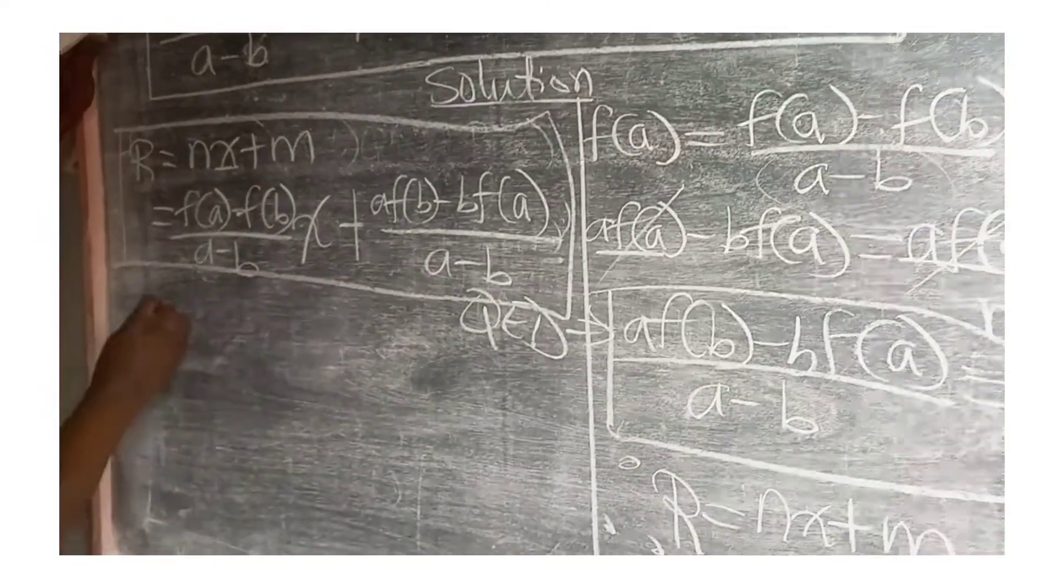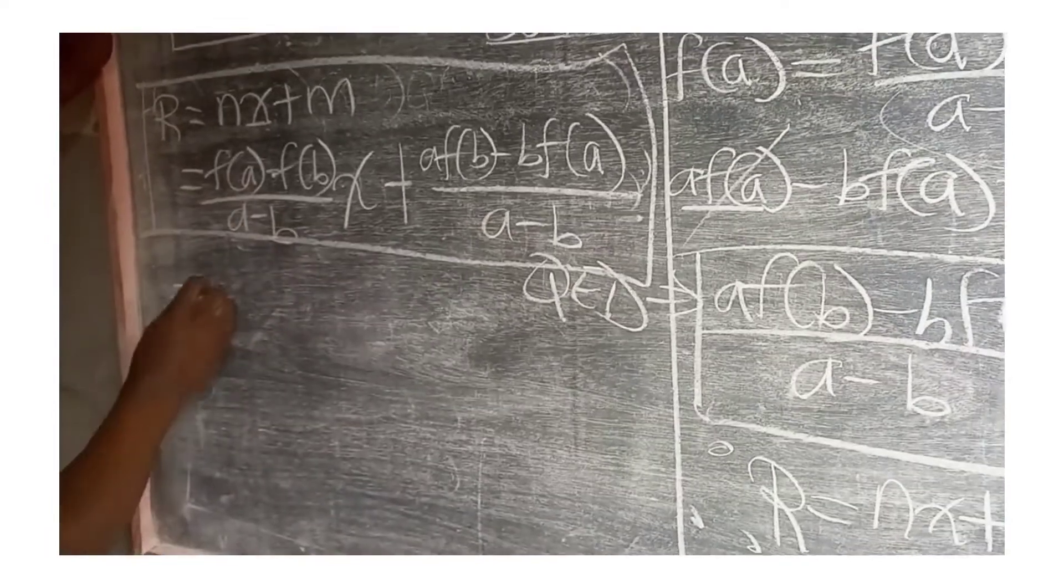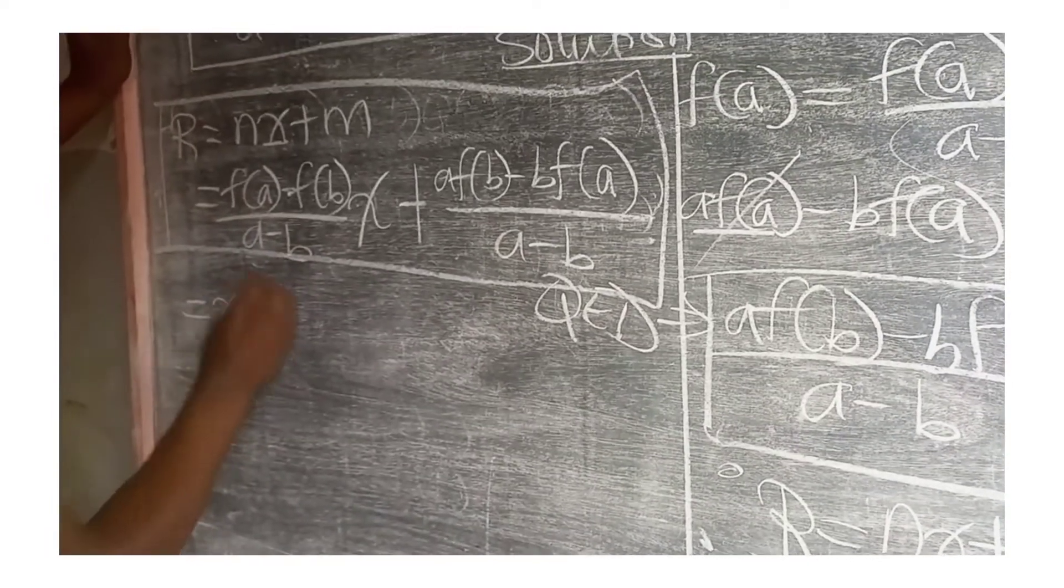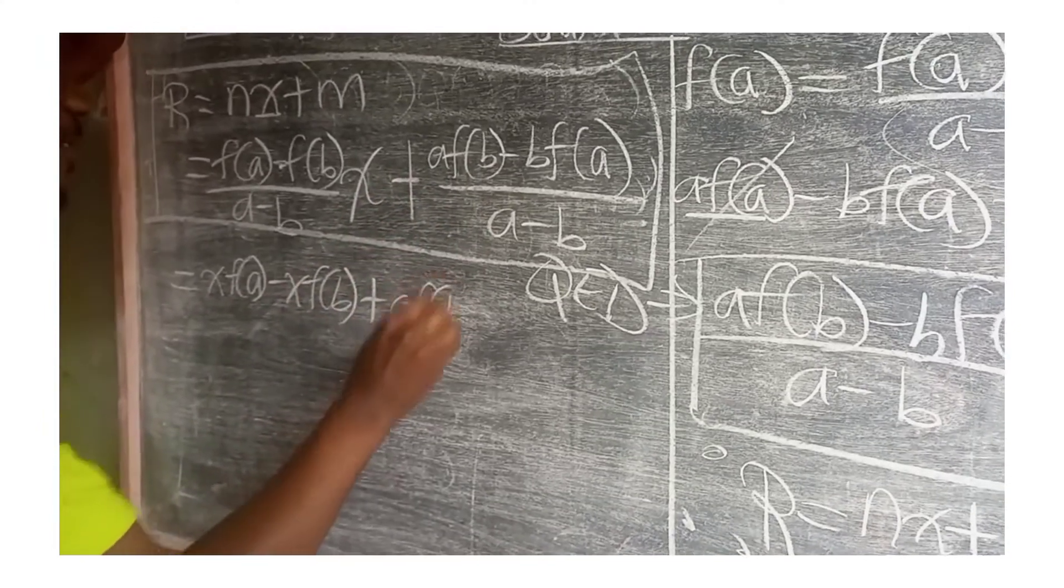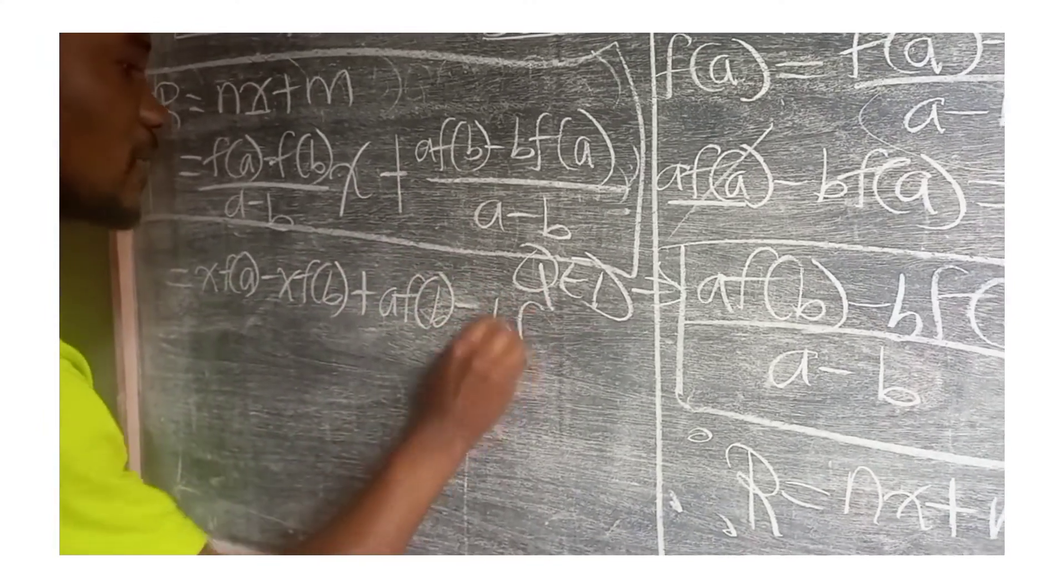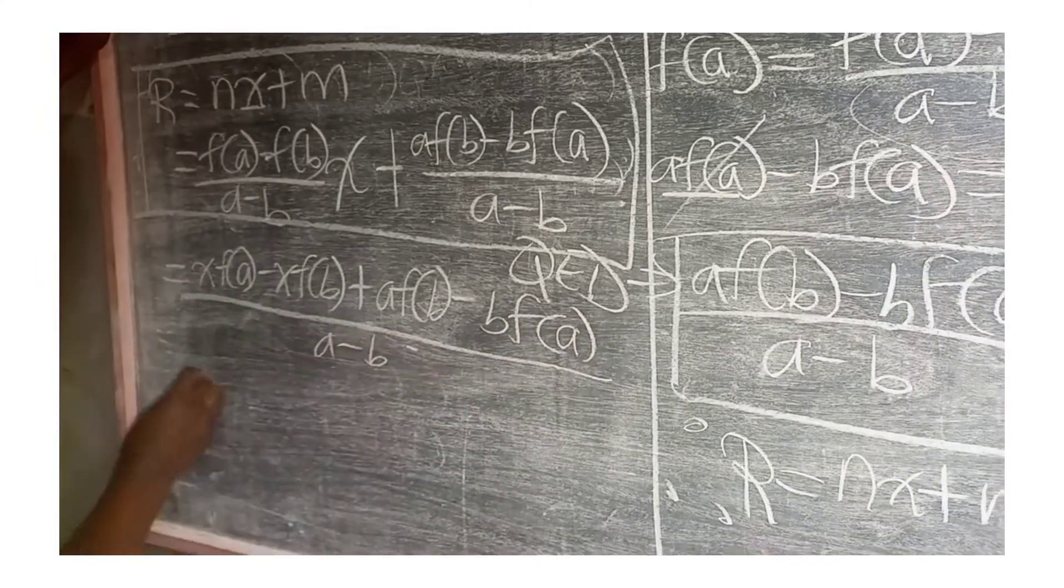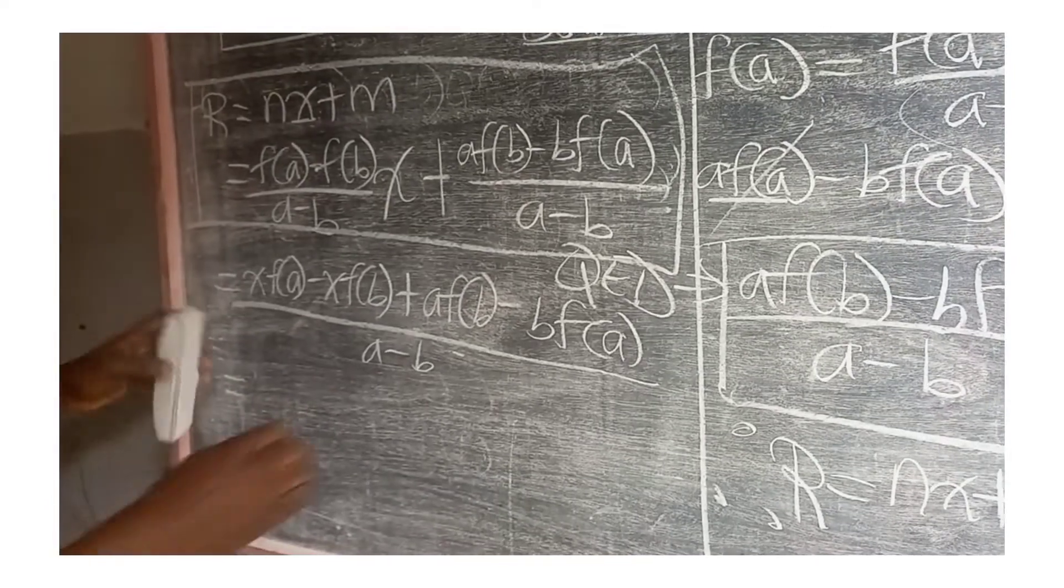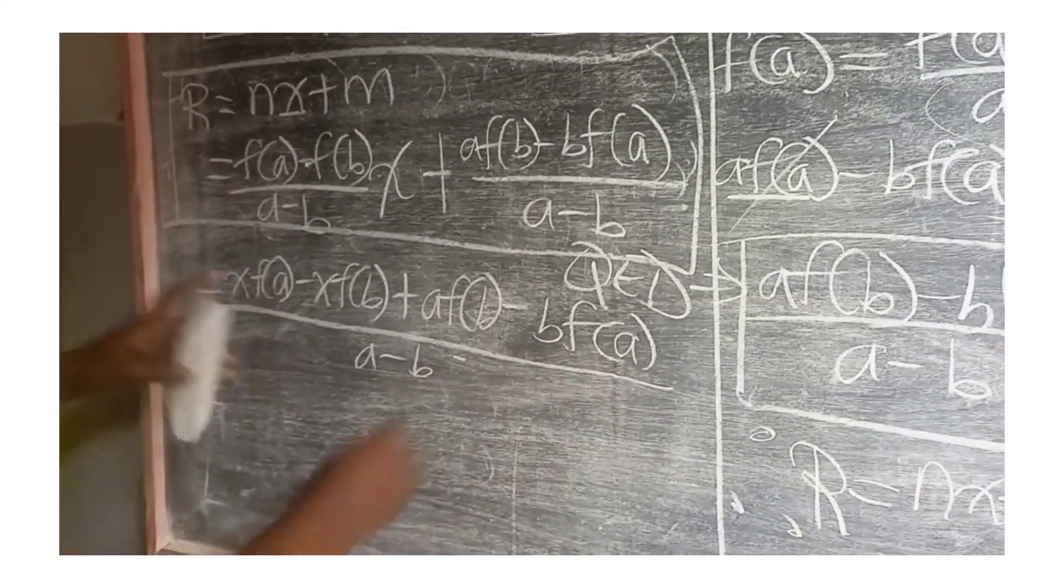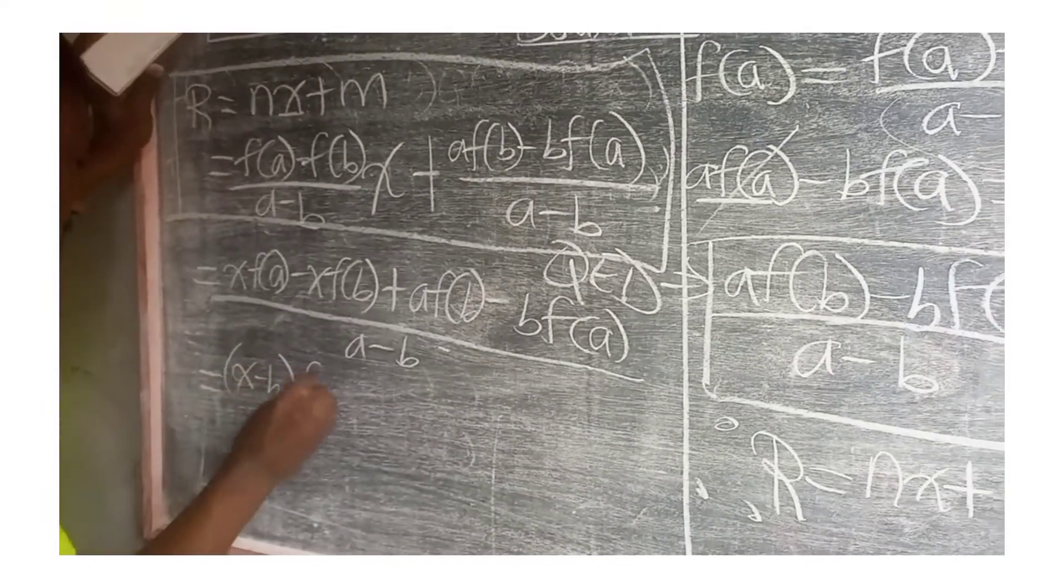So, taking the LCM, we can have this as [ax·f(a) - x·f(b) + a·f(b) - b·f(a)]/(a-b), which is equal to, we have f(a), f(a), so we factorize out f(a), we're going to have (x-b)·f(a).